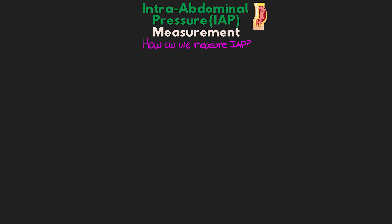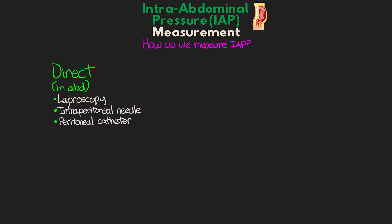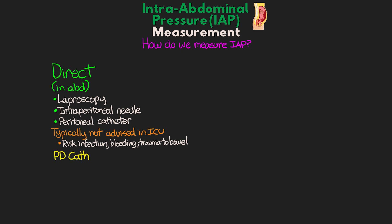There are several different ways in which we can actually obtain this pressure measurement. First, we can measure pressure directly in the abdomen, and this can be done during a laparoscopic procedure or with an intraperitoneal needle or catheter. This is typically not advised in the ICU due to the risk of infection, bleeding, or trauma to the bowel. If the patient already has a peritoneal dialysis catheter in place, that could be used, but continually accessing this catheter also poses potential infection risk.